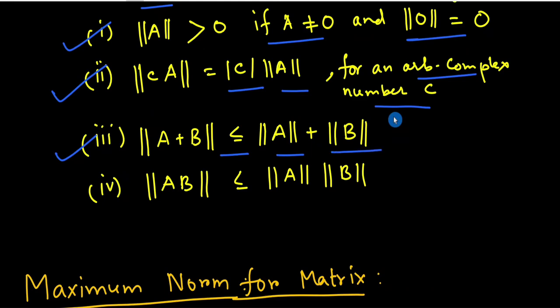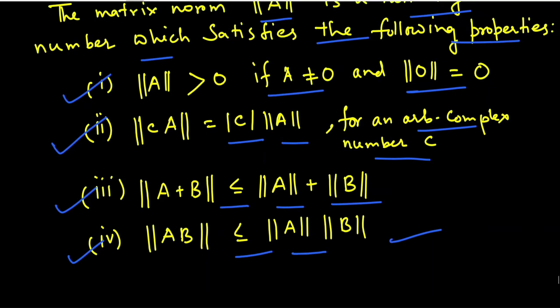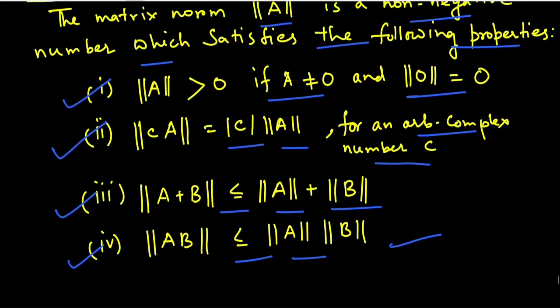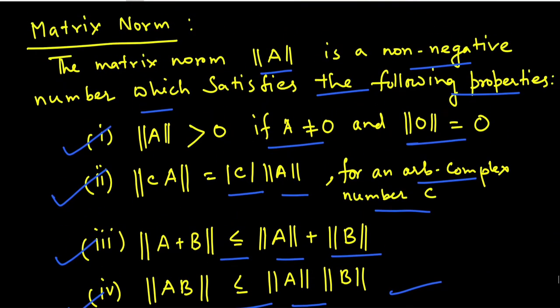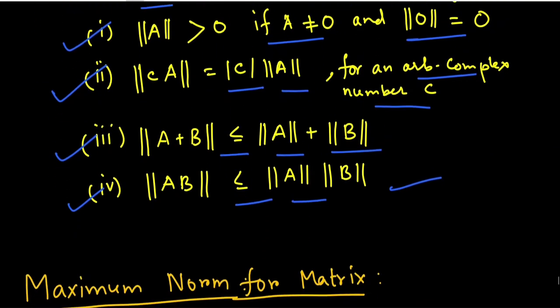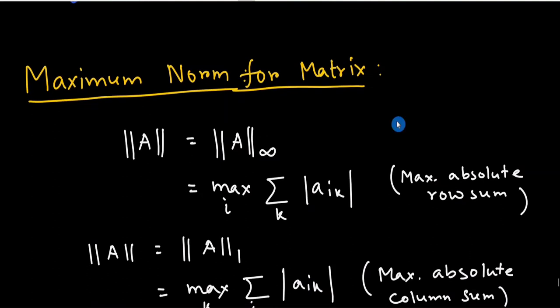Property 3: norm(A + B) ≤ norm(A) + norm(B). Property 4 (the last condition): norm(AB) ≤ norm(A) × norm(B). If these four conditions are satisfied, then we define it as a matrix norm.